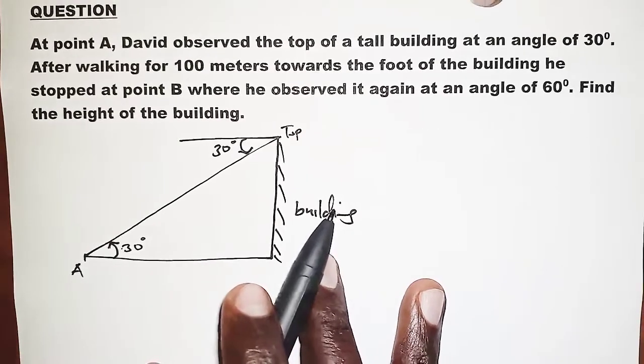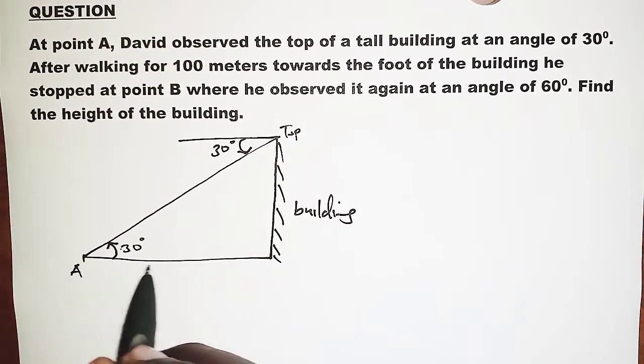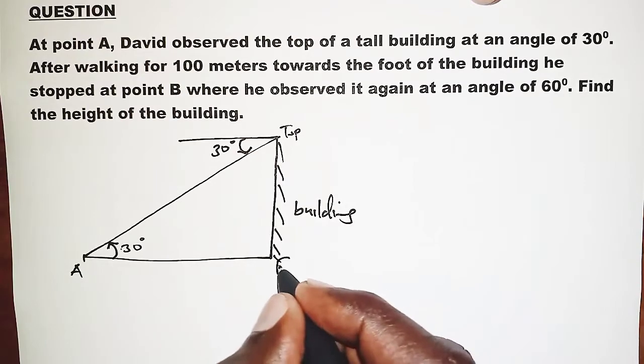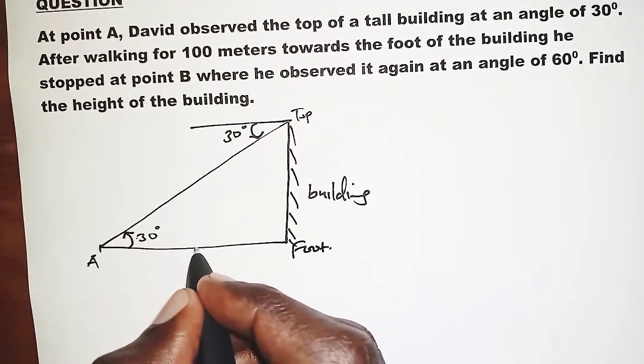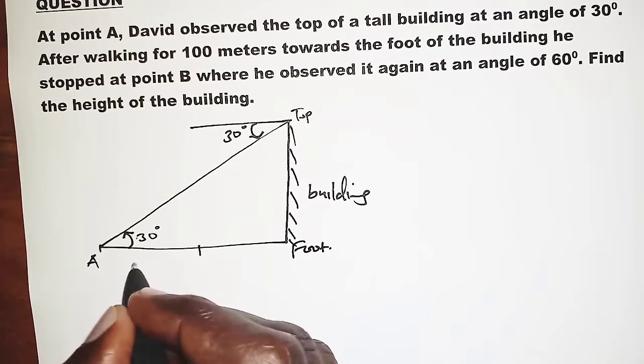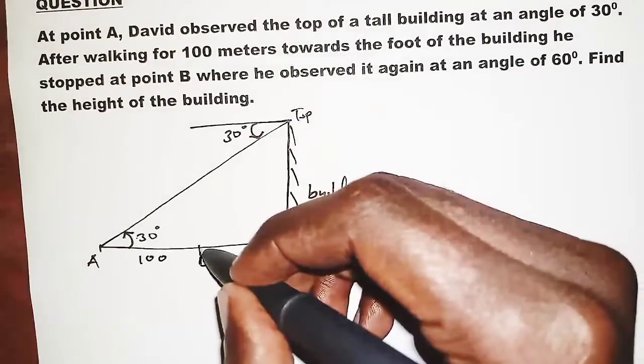So we are told that David moves from point A towards the foot of the building. So we have the foot of the building at this point, so he moved 100 meters to point B.